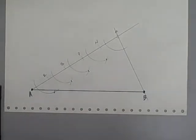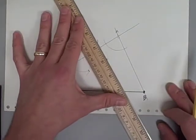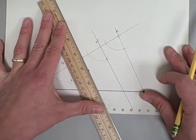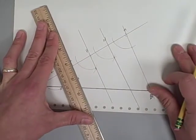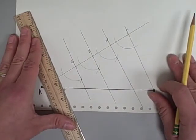Now each of those I'm going to connect to make the line. So point N to that intersection, P and its intersection, Q and its intersection, and then R with its intersection.